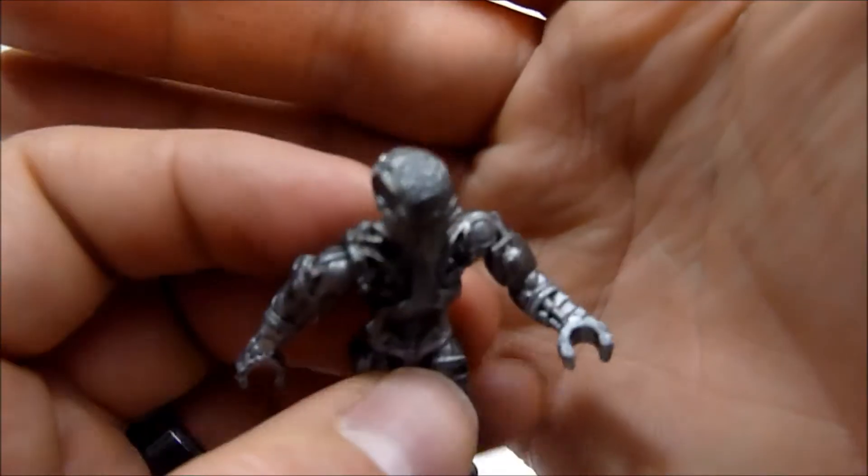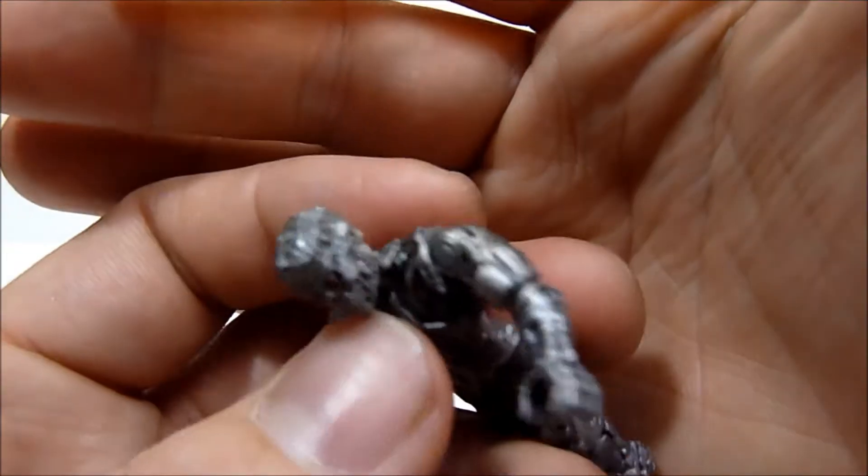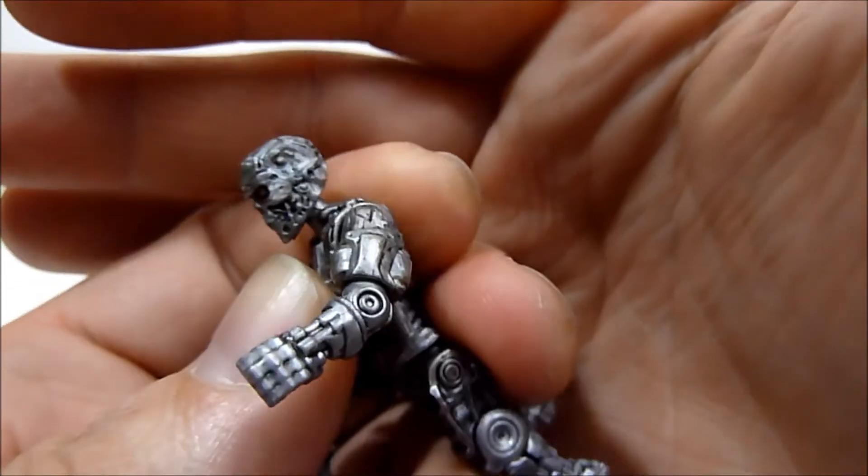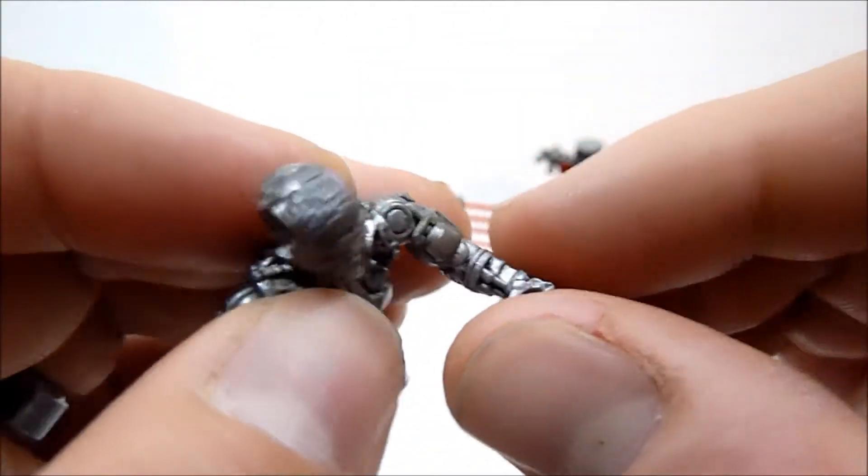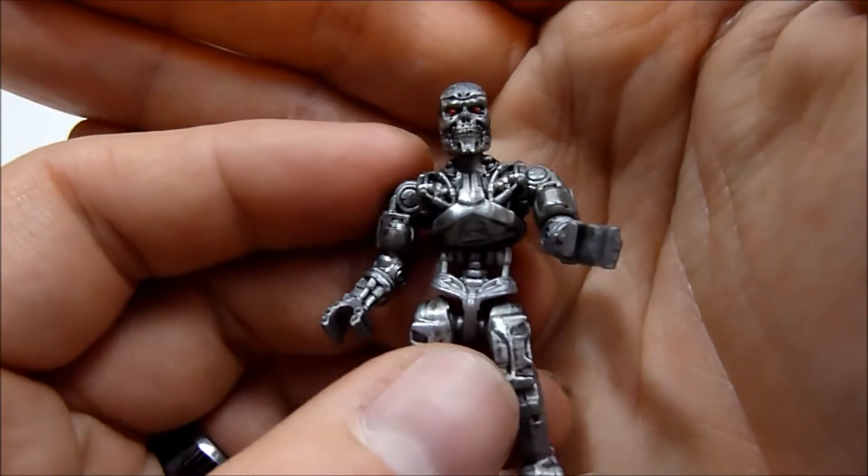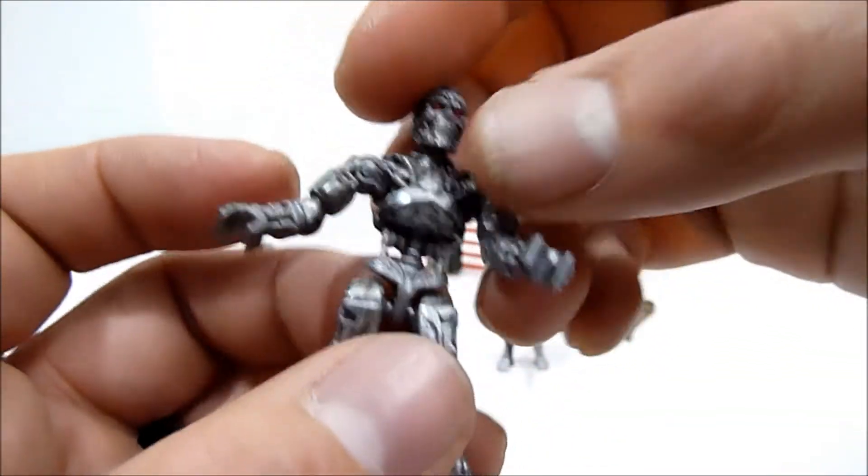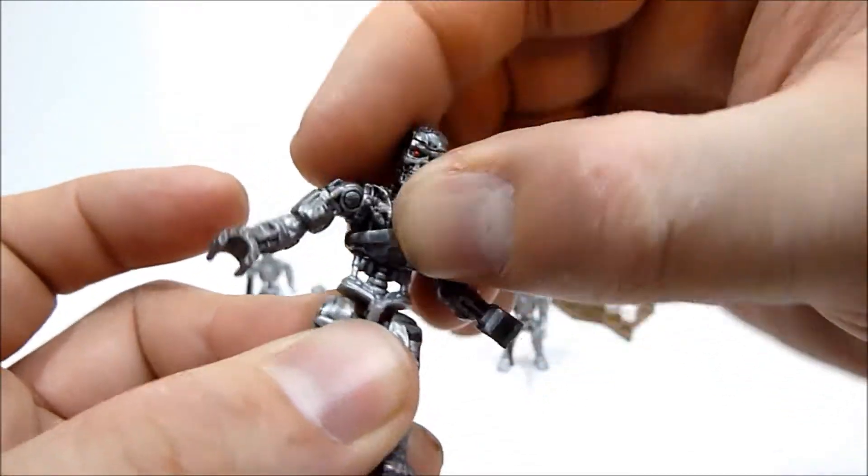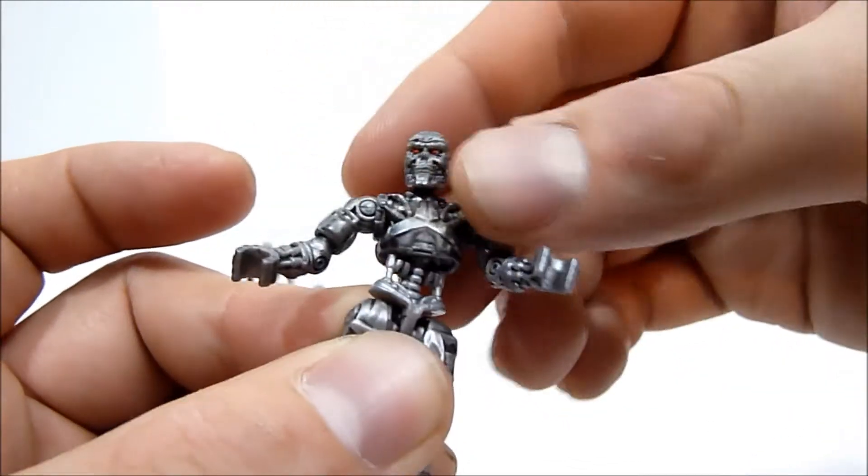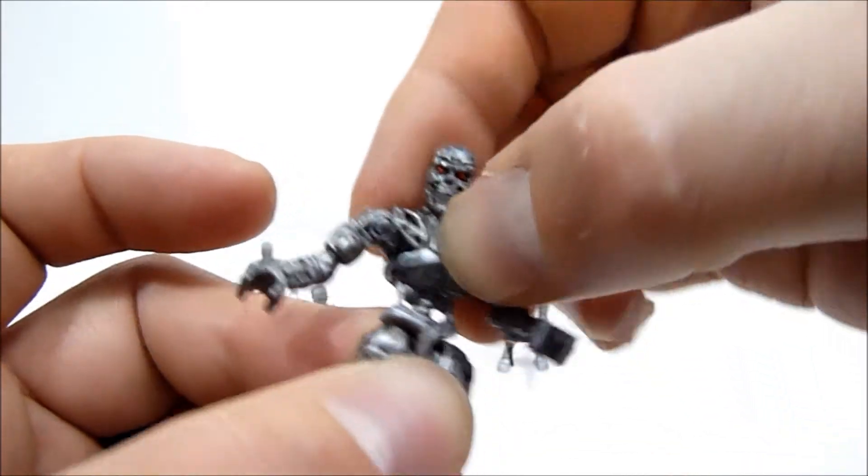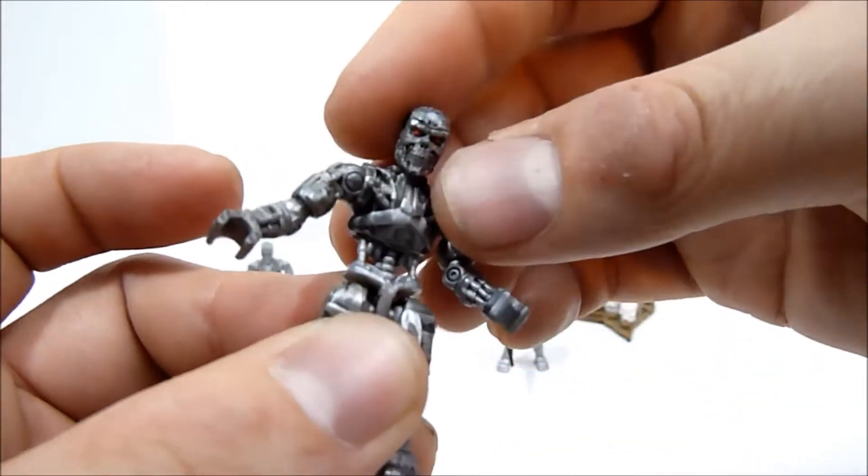So if that's a deal breaker for you, unfortunately you're not going to find it here. But I mean, it's not a deal breaker for me and these figures are pretty darn great, I feel, regardless. What they lack in elbow articulation they make up for in upper waist articulation. They have a ball jointed upper waist torso crunch bit in the middle here.